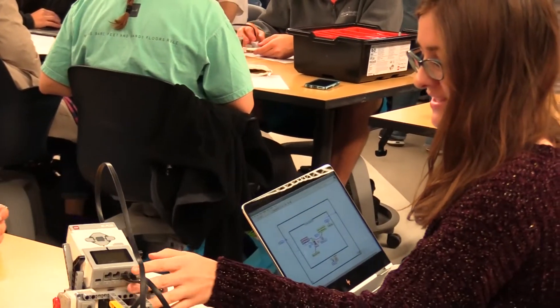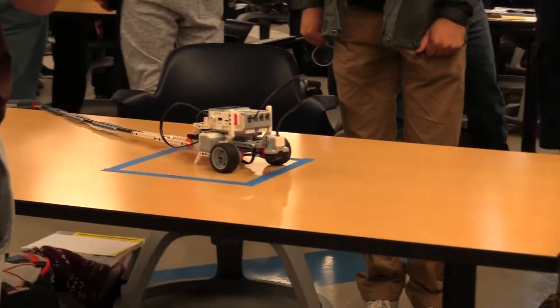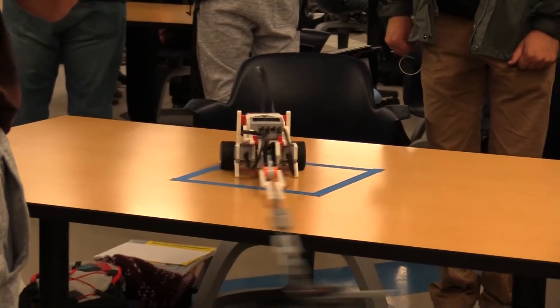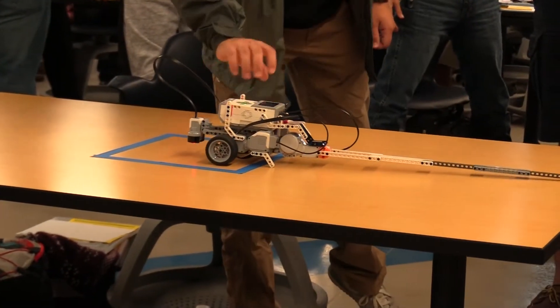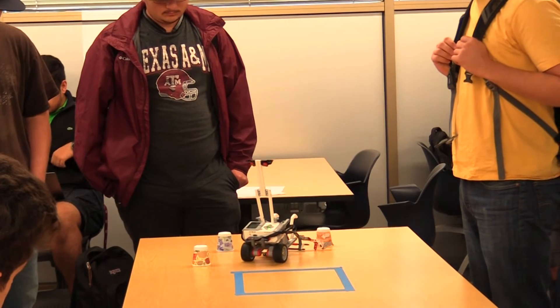On average students save between fifteen hundred and two thousand dollars per semester. In addition, they get to experience all of what the A&M campus has to offer, so Engineering Academy students are treated just like full-time A&M College of Engineering students.